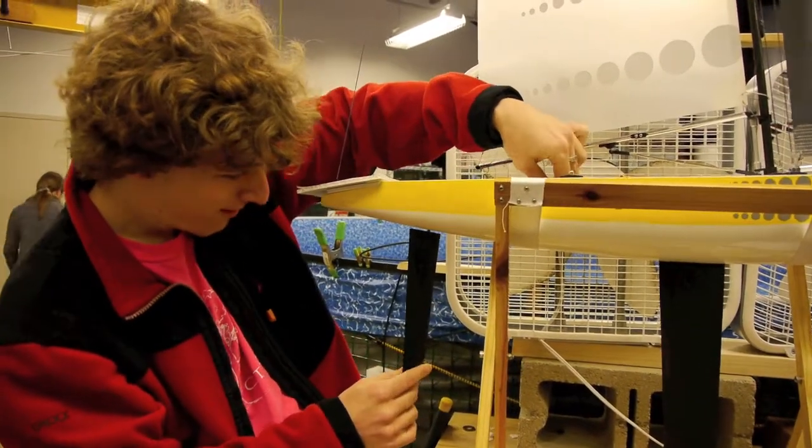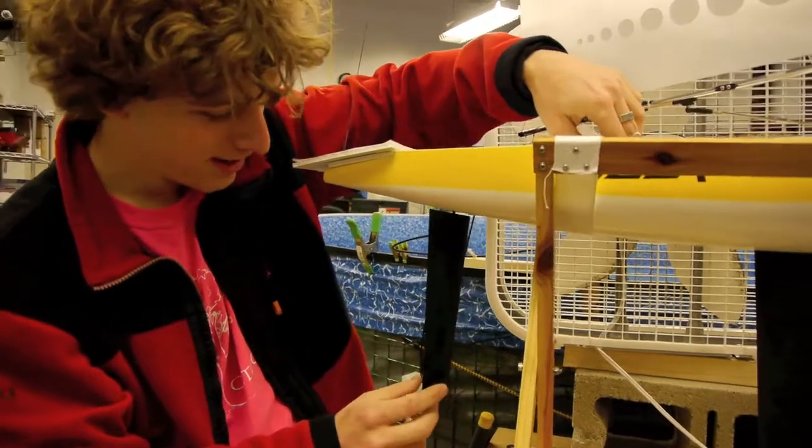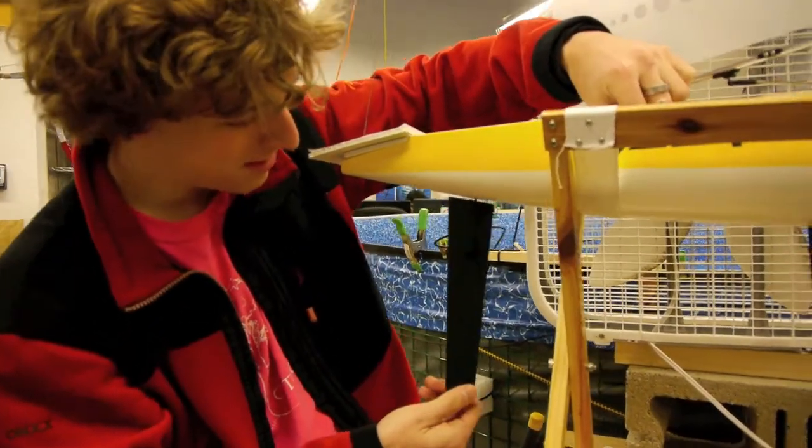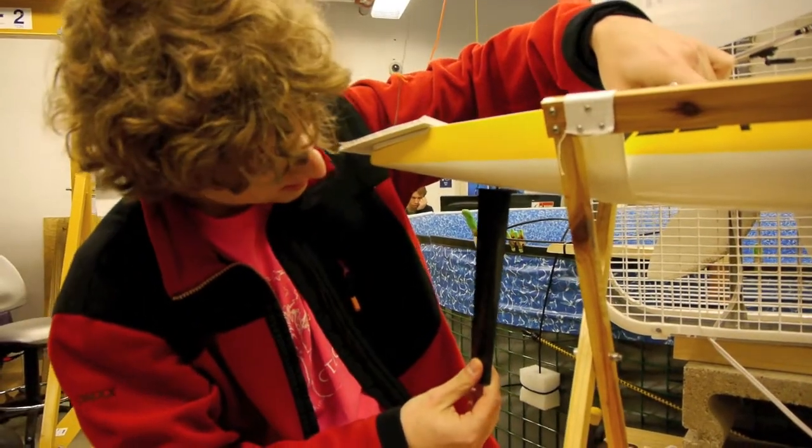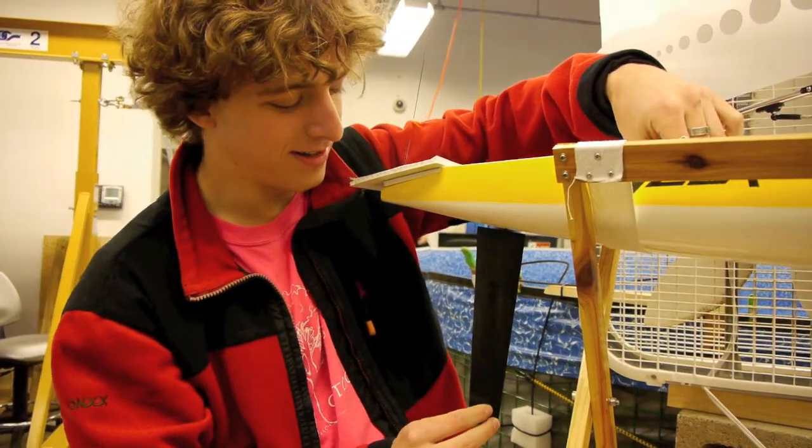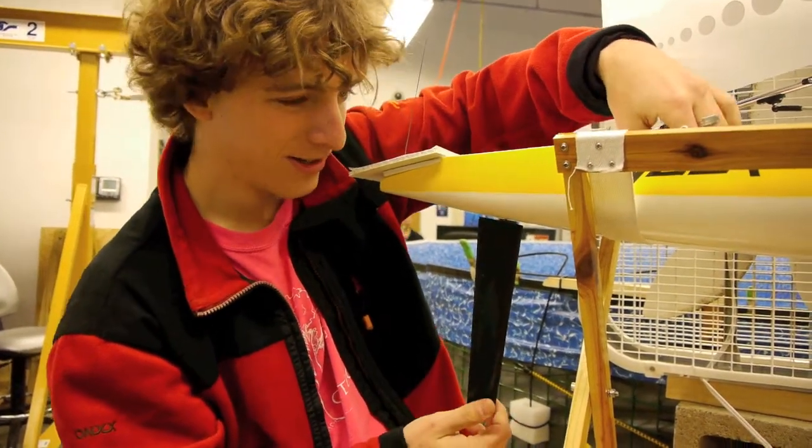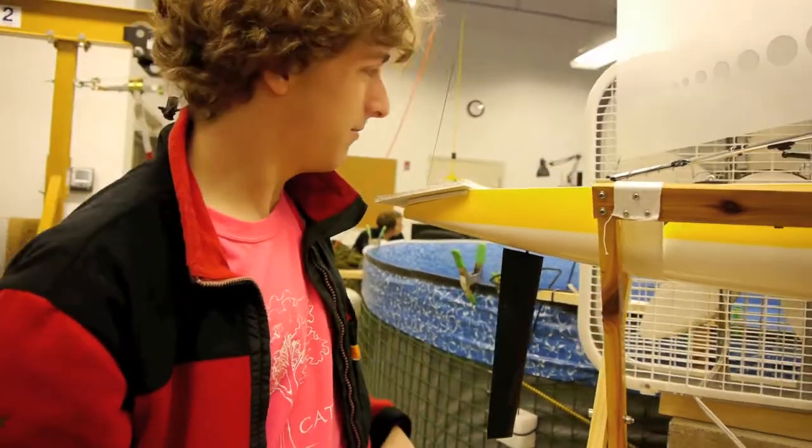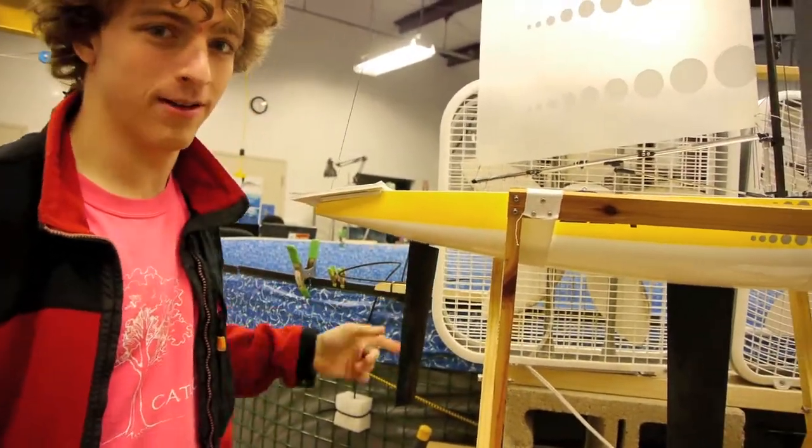The rudder of the boat we modified. Originally it could only go 30 degrees and we modified it so that it can turn to 50 degrees which means that we can do a lot tighter maneuvers in this pool when we're going fast.